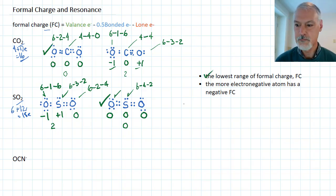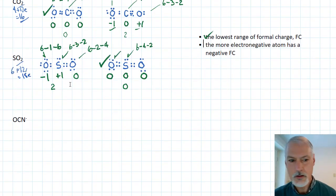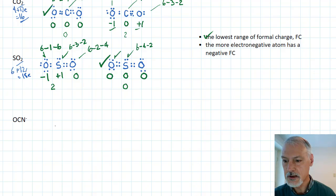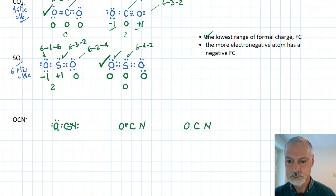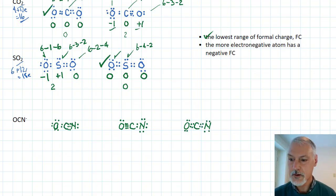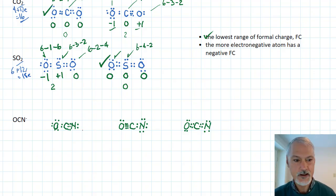With that in mind, let's take a look at the OCN⁻ ion. There exist three possible structures for this, all having the same number of electrons and all obeying the octet rules.